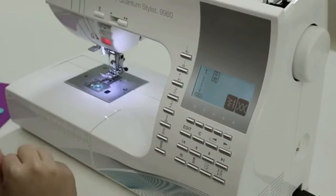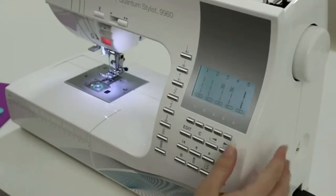I'm going to select the basic bar tack buttonhole 104. So I'm going to come to my function button that looks like a straight stitch and a zigzag, and I'm going to scroll until I see 104.